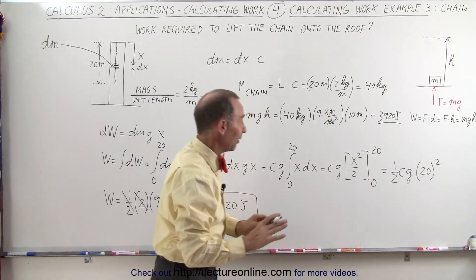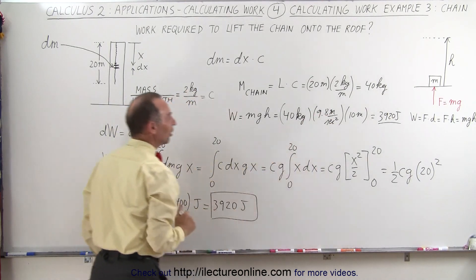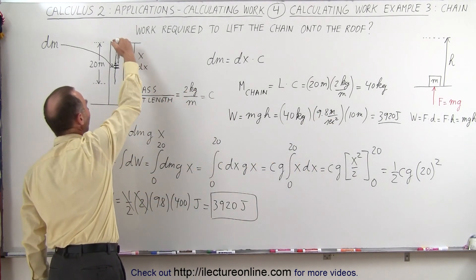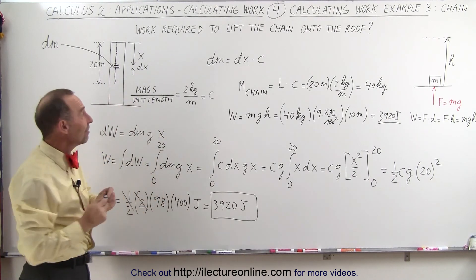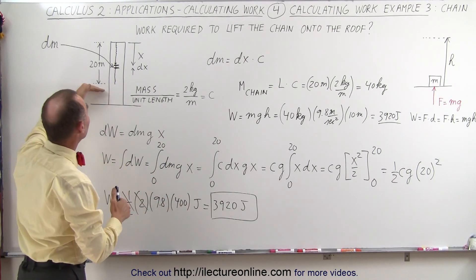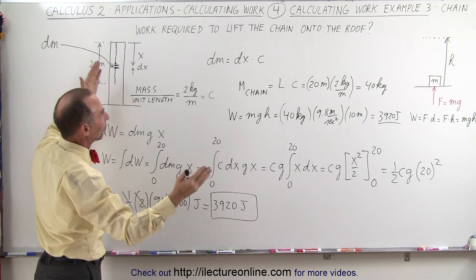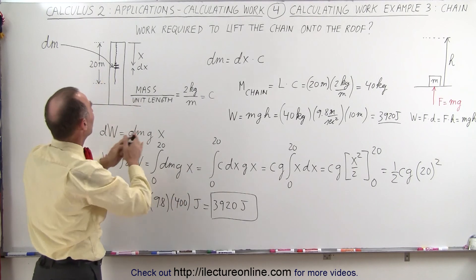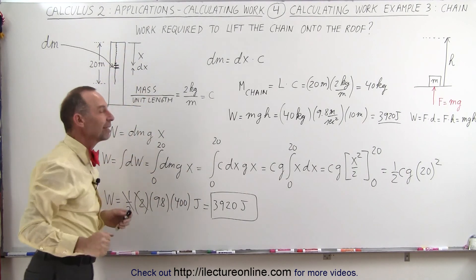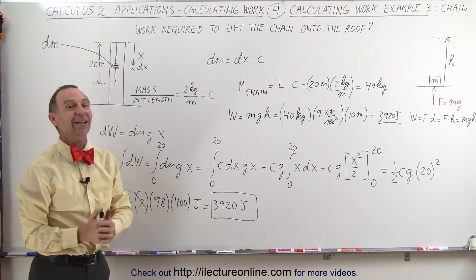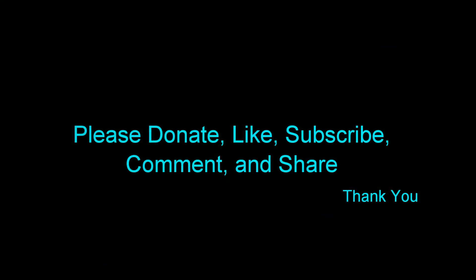For a moment there I thought wow I was not getting the same result, but sure enough we'd get the exact same result. Notice we can simply integrate over every little segment of the chain, or in this case since the function is linearly dependent on the distance from the roof or the distance that we have to lift it, we can then say let's take all of the mass of the chain, put it at the middle point, lift it from there up to there, and we would get the exact same result. And that's how it's done. Thank you.